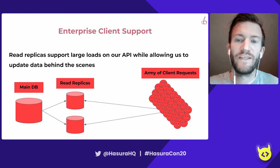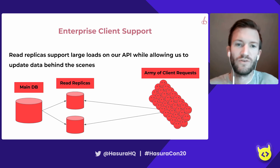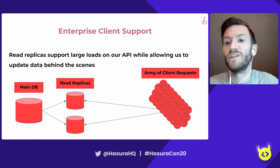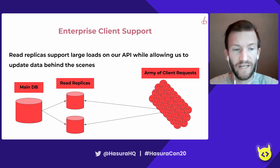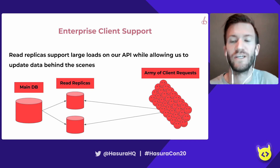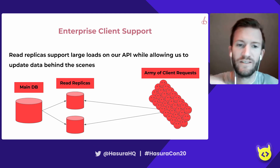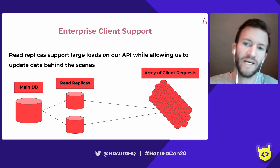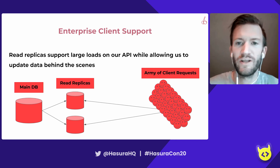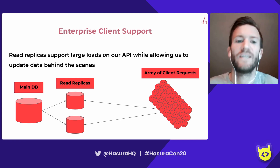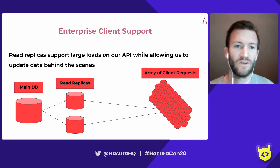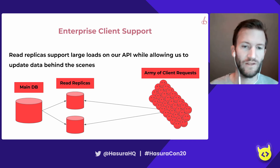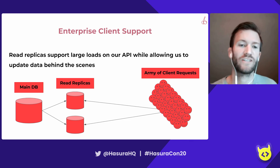Read replica support. This becomes really important as Cherry supports large enterprise clients with an army of client requests. Azure supports natively read replica support on top of a main database. We make lots of data updates to our main database, and we also have tons of API traffic coming in — we want to separate those. We don't want our API traffic impacting our main database where we're making updates and changing data. By having read replica support, we let the read replicas take all of the load-balanced activity and protect our main database where we store all of our updates coming into production.